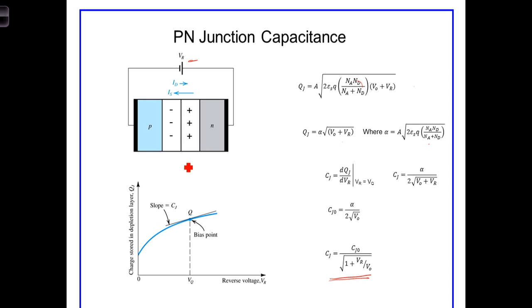As you can see, it's a rather nonlinear dependence on the voltage, but it can be quite useful as a variable capacitor in IC design. Typical values of the junction capacitance can be on the order of picofarads.